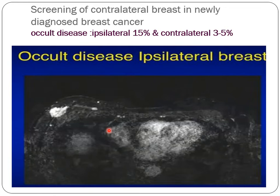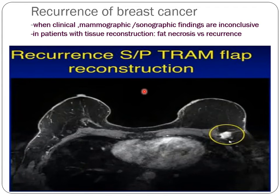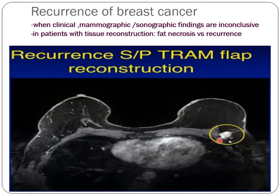Occult disease in the ipsilateral breast is also an indication — particularly lesions in the pectoralis region or skin. Since many surgeons prefer skin-sparing mastectomy, identifying skin invasion on MRI is important; if the lesion invades the skin, total mastectomy should be performed. Similarly, for patients who have had TRAM flap breast reconstruction after mastectomy, MRI follow-up can detect malignant lesions at the reconstruction site.